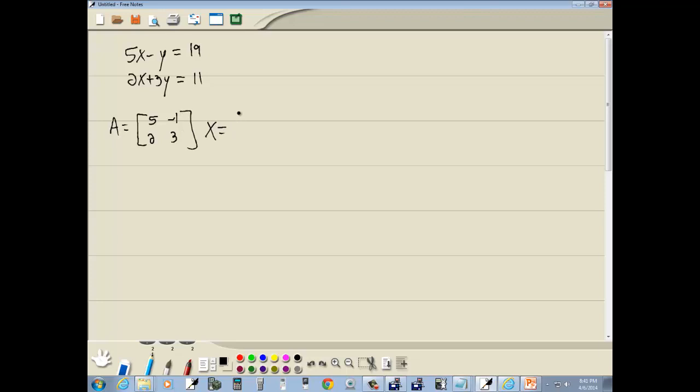Our X matrix, that's uppercase, will be our variables, which is little x and little y. Now B, a lot of books put this as lowercase, I'll make it uppercase. That's our constants on the right side.